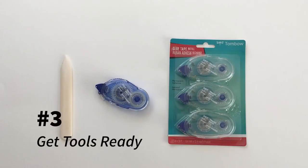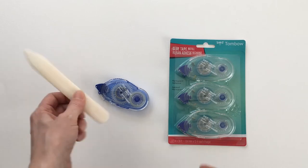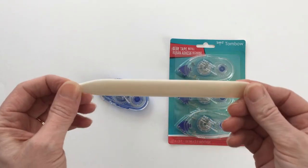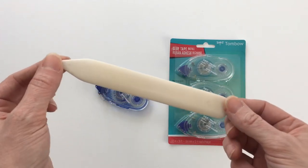Step three, make sure you have the tools you need to do the job. These are our most commonly used tools. This is a scoring tool, also called a bone folder sometimes. They can be made out of bone. I don't know how many of them are actually made out of bone anymore, but you can get them at Michael's or Amazon.